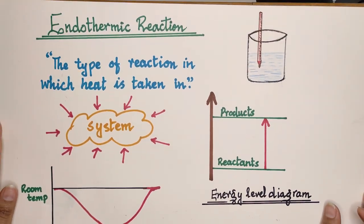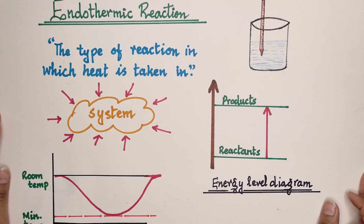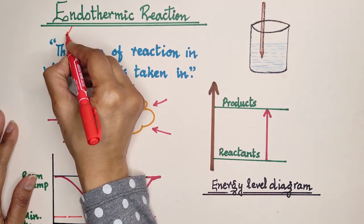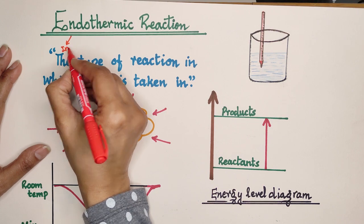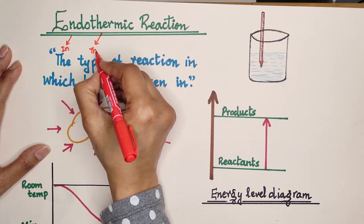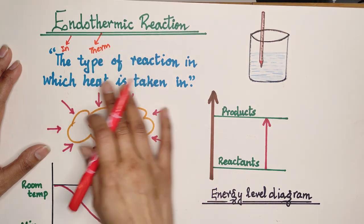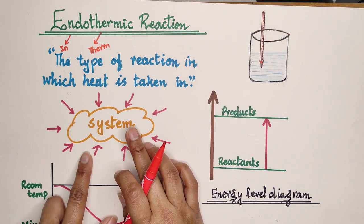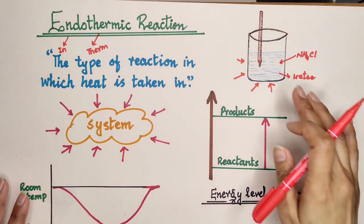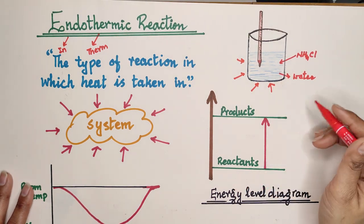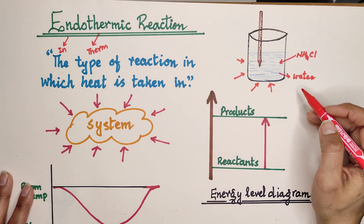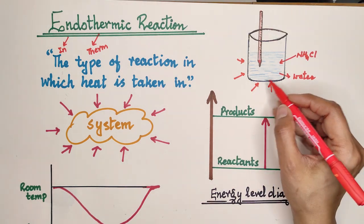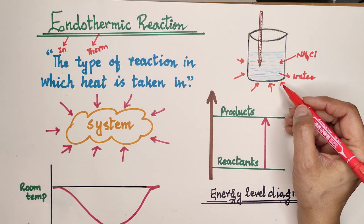Moving on to endothermic reactions: 'endo' means 'in,' so an endothermic reaction is one in which heat is taken in from the surrounding. For example, when ammonium chloride is dissolved in water, there is a decrease in temperature, and the mixture takes in heat from the surrounding.